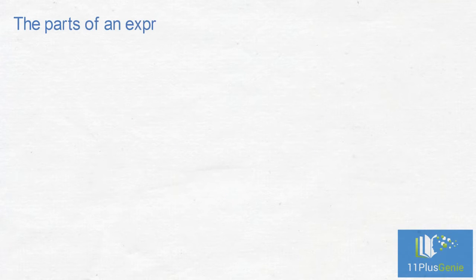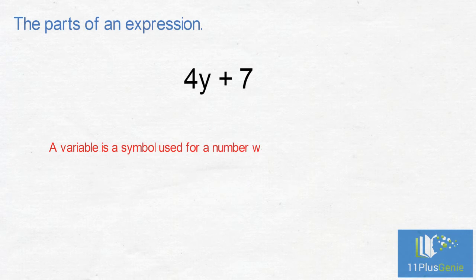The parts of an expression. Let's look at the expression 4y add 7. A variable is a symbol used for a number we don't know yet. In this example, y is a variable.